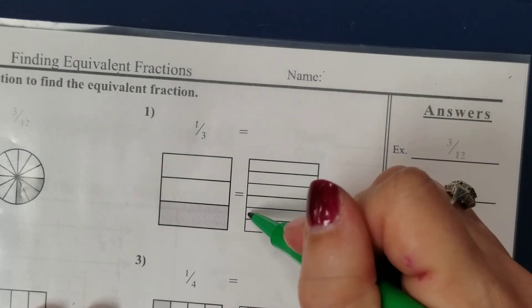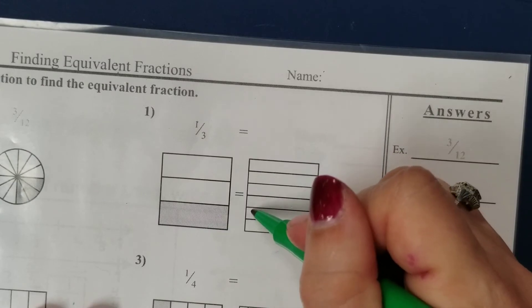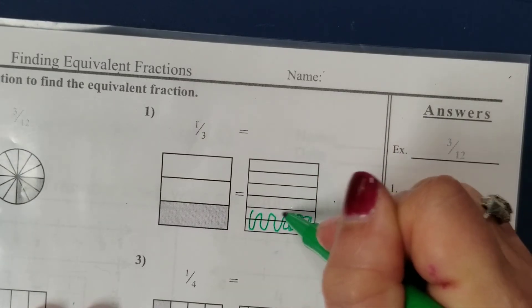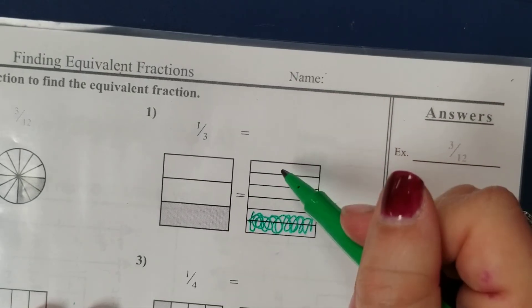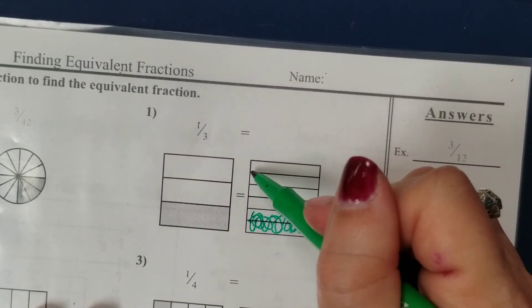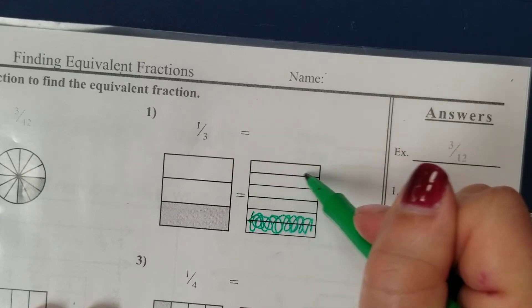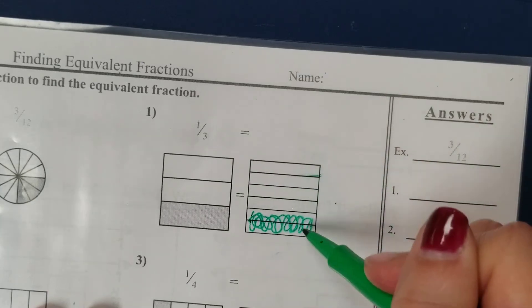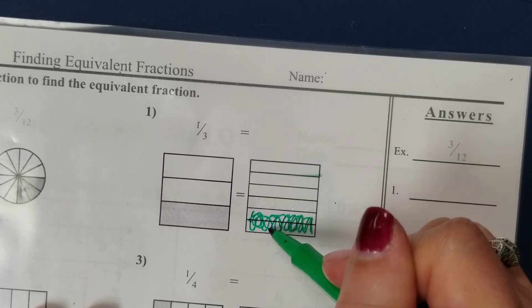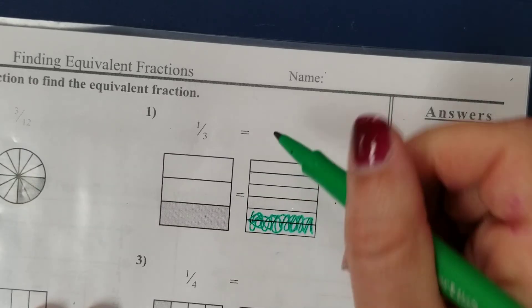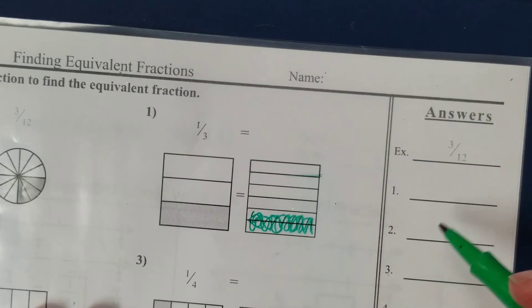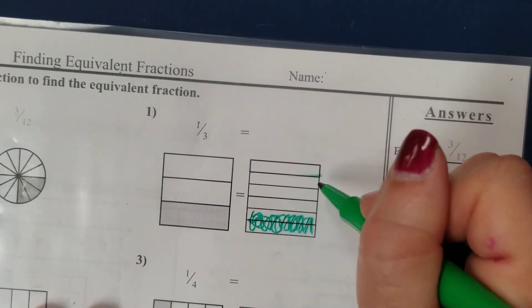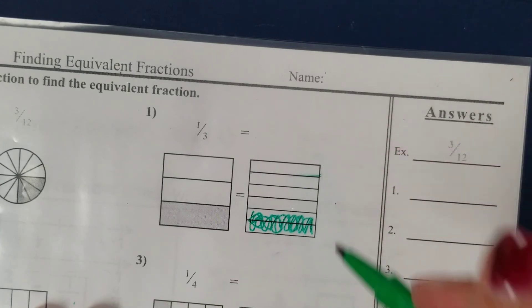So now they're asking us to shade in an equivalent amount over here on the right. If you look closely, you can see that each of these larger pieces has been split in half. So I shaded in two equal parts down here at the bottom. To find the equivalent fraction, we always start with the denominator. How many pieces is that one whole broken into equally?